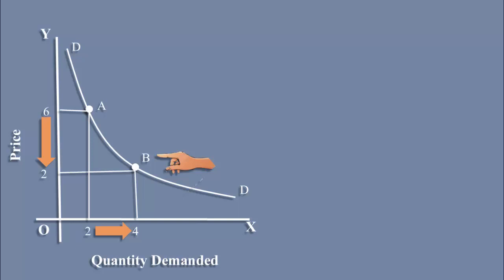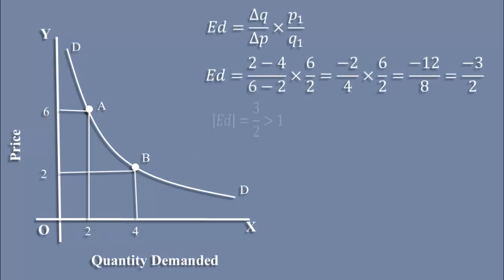Well, what is the elasticity then? On applying the percentage method formula, we get minus 3 by 2. As usual, we get the absolute value. It is 3 by 2. It is greater than 1. In the range AB, the demand is relatively elastic.